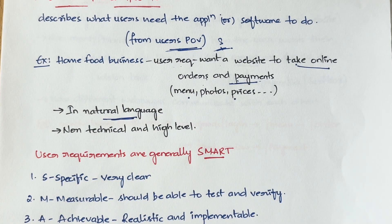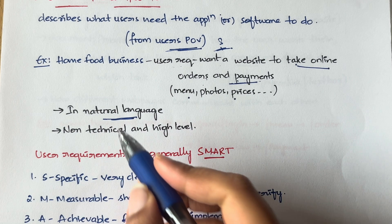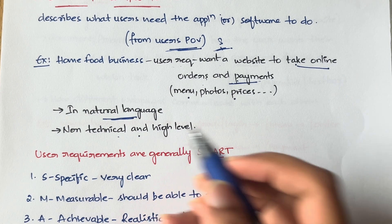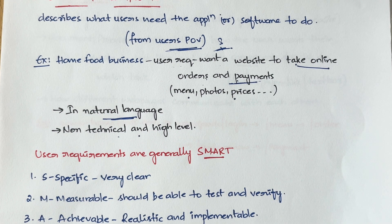User requirements are usually written in natural language — very simple language with no heavy technical terms involved. They are non-technical and written at a very high level, so there are no technical descriptions or terminologies involved.